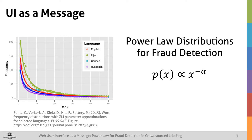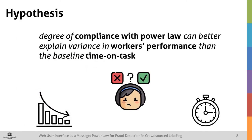An example in the finance domain is Benford's law for the leading digits. The hypothesis for our paper is that the degree of compliance of UI element frequencies with the power law can better explain the variance in workers' performance for UI labeling tasks than the baseline metric of time on task.